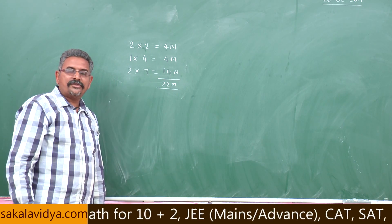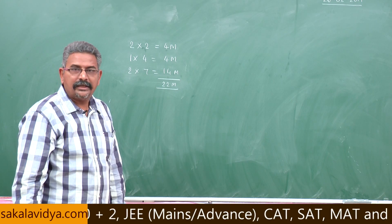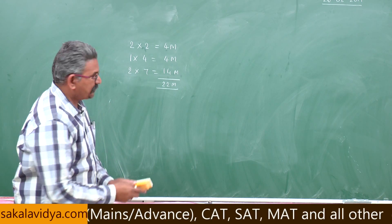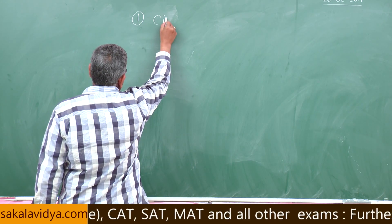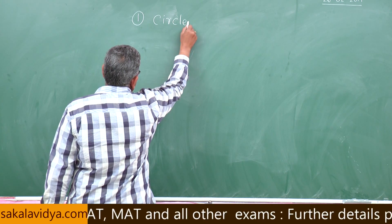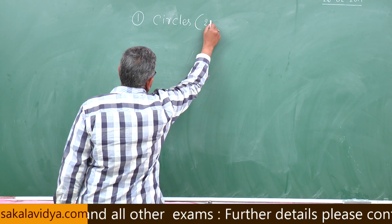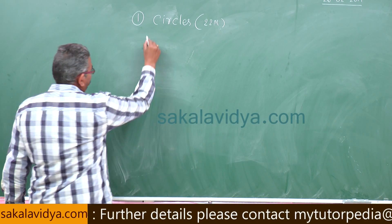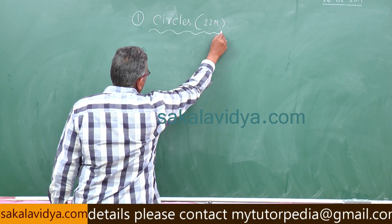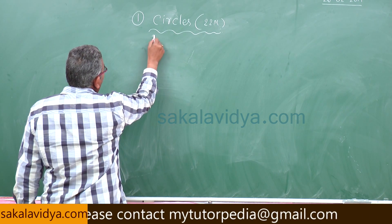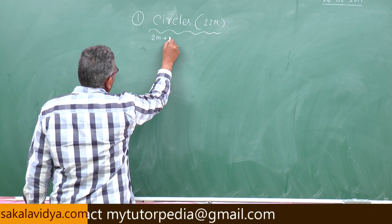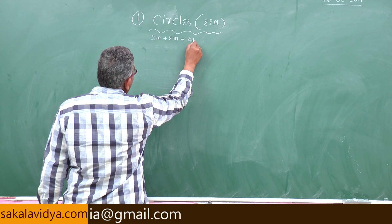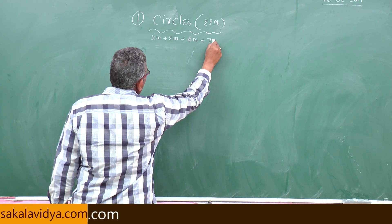Let us start the circle chapter. Circles weightage is 22 marks. The marks structure will be like this: 2 very short answer each carries 2 marks, that will be 4 marks, and 1 4 marks question that is 4 marks, 2 SI type questions each carry 7 marks that is 14.